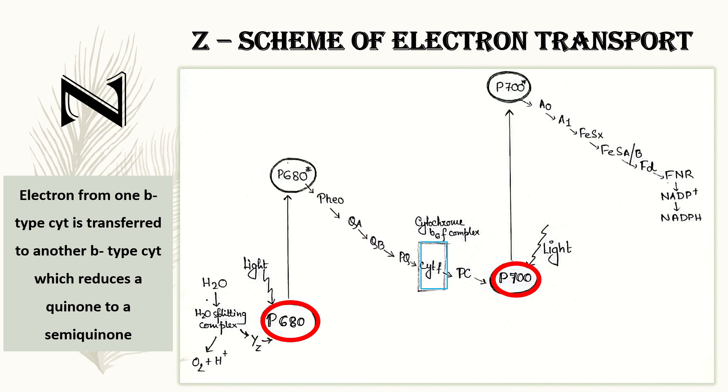Now, electron from one B-type cytochrome is transferred to another B-type cytochrome which reduces a quinone to semiquinone. Please keep in mind it reduces a quinone to a semiquinone.